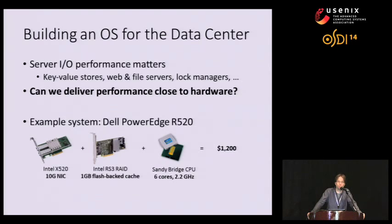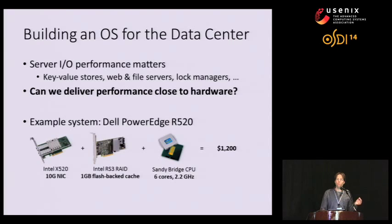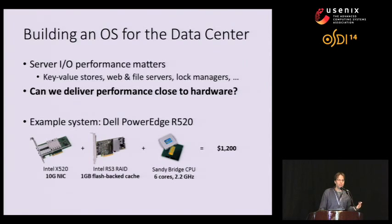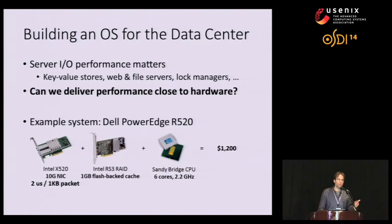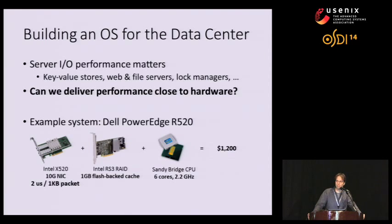You could buy this system straight off Dell for around $1,200 — a commodity data center server, not fancy expensive technology. To give a handle on I/O performance: if we're receiving one-kilobyte-sized packets at line rate on one port of our 10-gigabit Ethernet controller, we're talking about a packet arrival rate of about one packet every two microseconds. That gives you a sense of the headroom the operating system has for I/O processing — not very much.